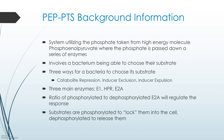The PEP-PTS is a system utilizing the phosphate taken from the high-energy molecule phosphoenolpyruvate, and this phosphate is passed down a series of enzymes. This process involves a bacterium being able to somewhat choose its substrate. The three ways a bacteria can choose its substrate are catabolite repression, inducer exclusion, and inducer expulsion. The three main enzymes are E1, HPr, and E2A.